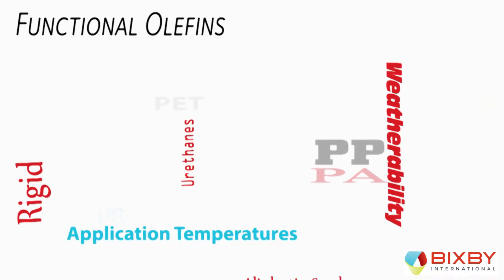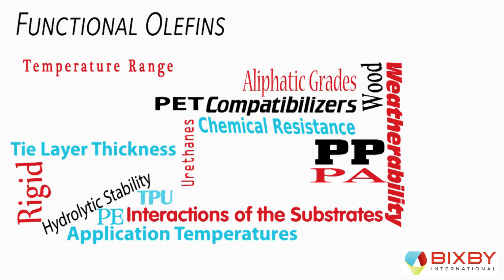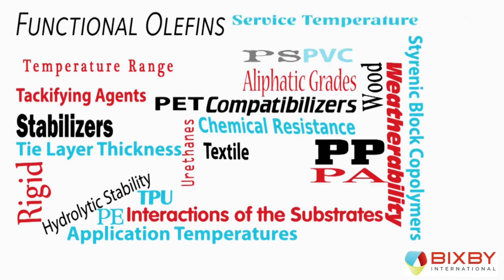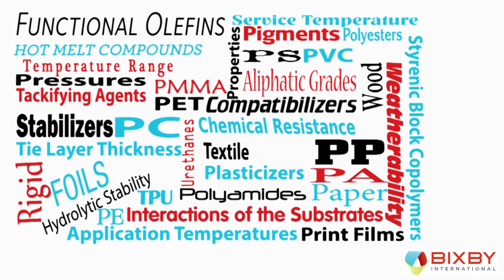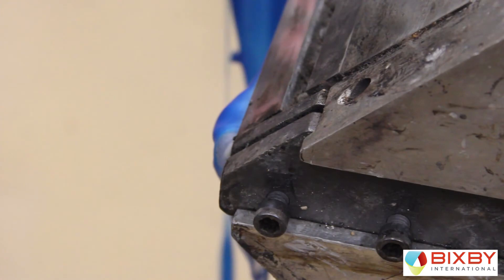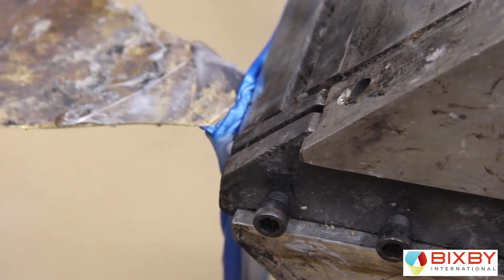Functional material interface layer chemistries and the proper tie layer play a key role in achieving optimum bond strength. It often comes down to hot melt chemistries, which is why it's crucial to choose the correct materials. There are many hot melt chemistries available from many different vendors, but there's also another alternative: Bixby not only works daily with a myriad of commercial hot melt chemistries, it also formulates its own hot melts for custom applications — incorporating color, conductivity, or UV blockers into the tie layer to give additional functionality to the laminate.